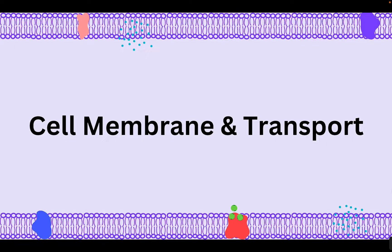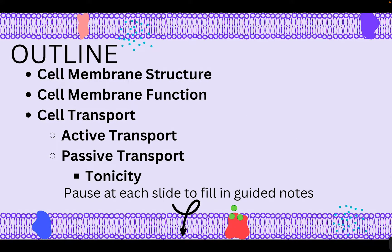Hello! This set of notes is going to be covering the topic of the cell membrane and transport of materials in and out of the cell. So let's go over the outline. In today's notes, we're going to start with an overview of the cell membrane's structure, then an overview of its function and purpose. We're going to zoom in on the two types of cell transport, which are active and passive, and discuss a concept called tonicity. You can pause at each slide and fill in the guided notes found in the description below, or you can watch these notes straight through.